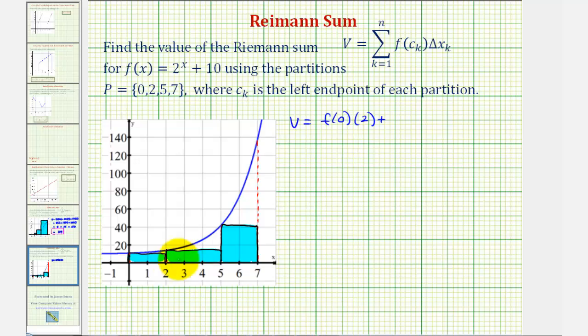plus, for the next rectangle, the height is the left side, or f(2) times Δx, which is 3, plus the height of the last rectangle would be f(5) times Δx, the width, which is 2 units.